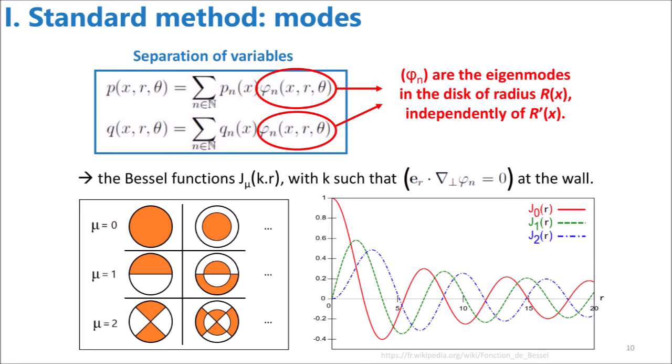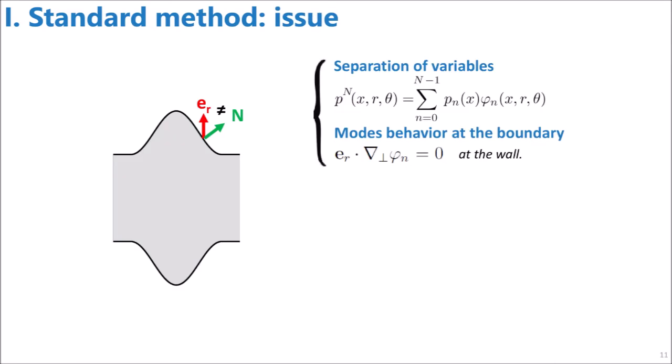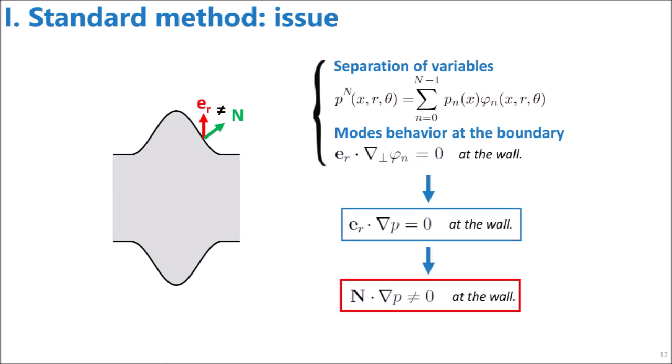A key point is they are distributed in azimuthal orders that we denote mu. Those azimuthal orders express the theta dependence, as we can see with those lobes, where the function value is either positive or negative. This way of choosing the modes dates back to the origins of the method when the waveguide was discretized as an assembly of very short cylinders. But since the work of Pagneux in the 90s, we consider the continuous variations of the radius which highlights an issue.